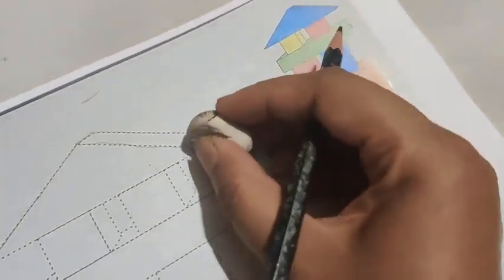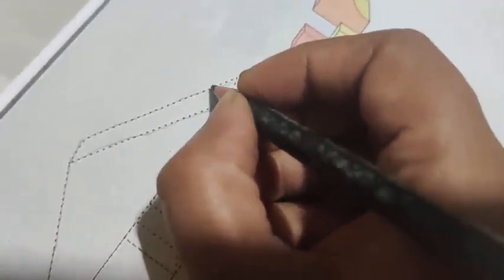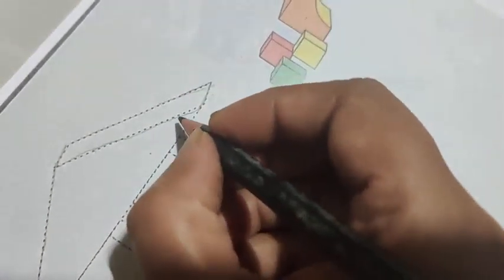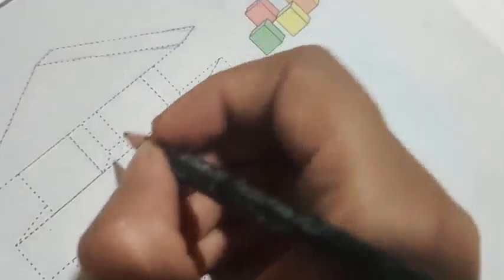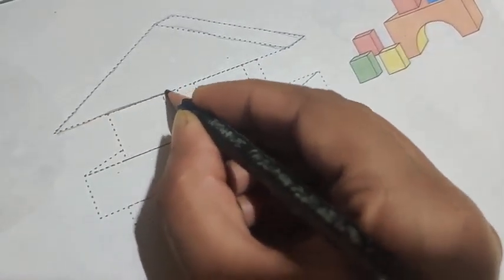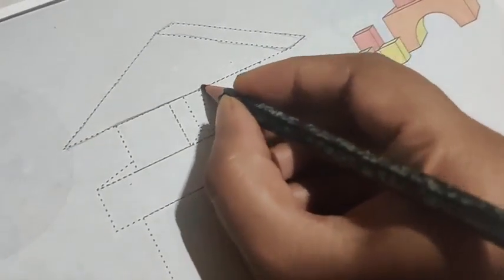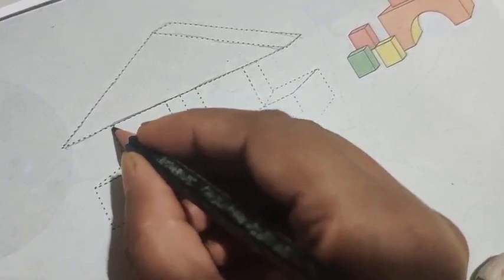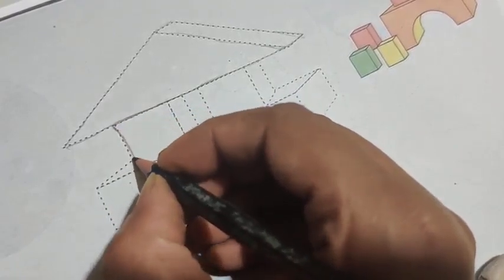See, my here is mistake is there. So I make it corrected. So like this, then like that. Got it. Then again we have to join other dotted like this.